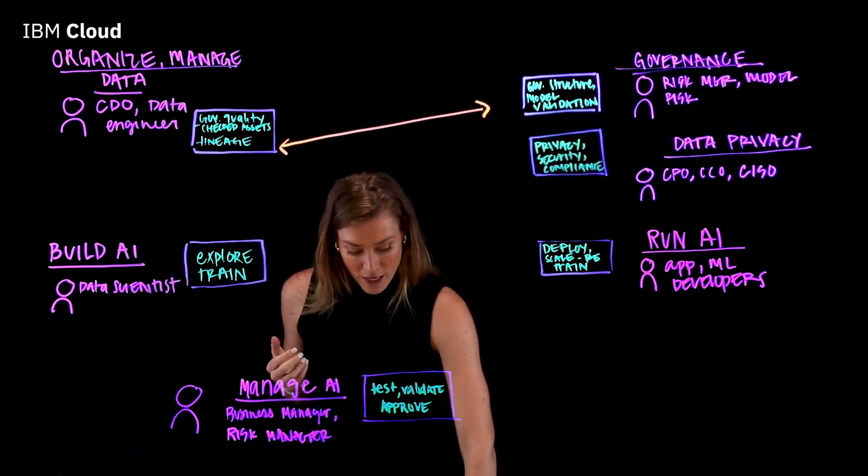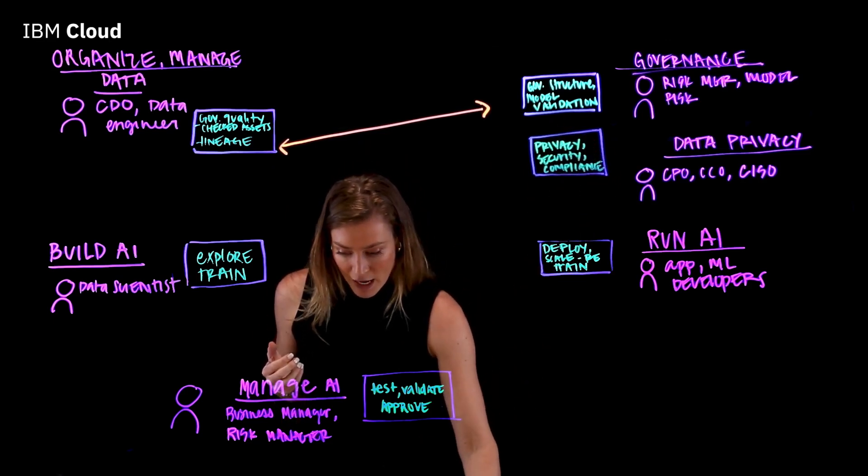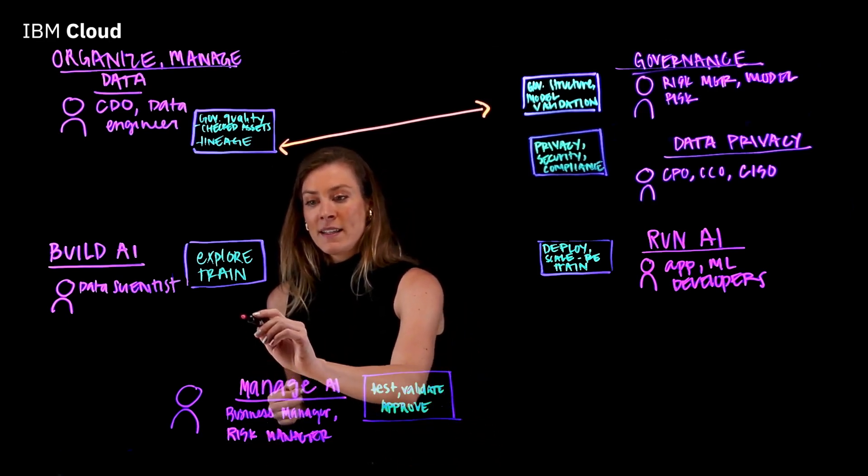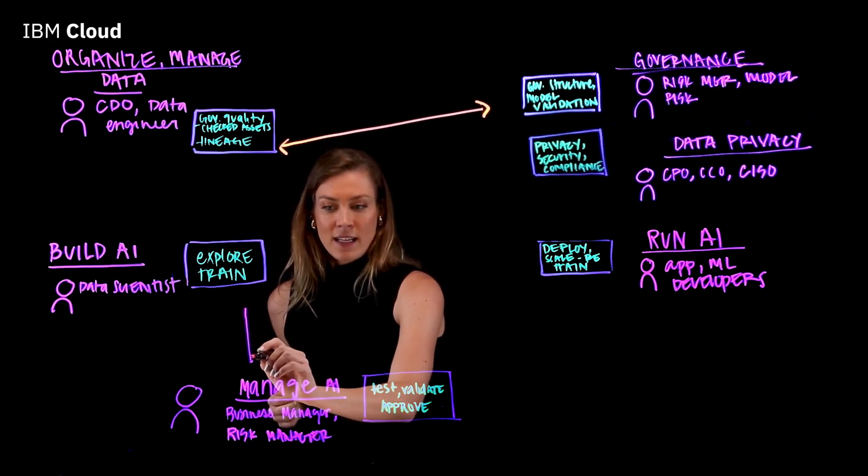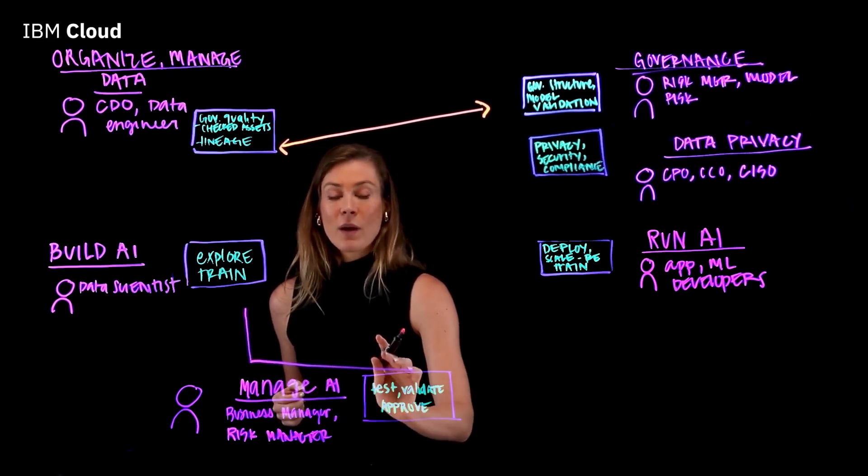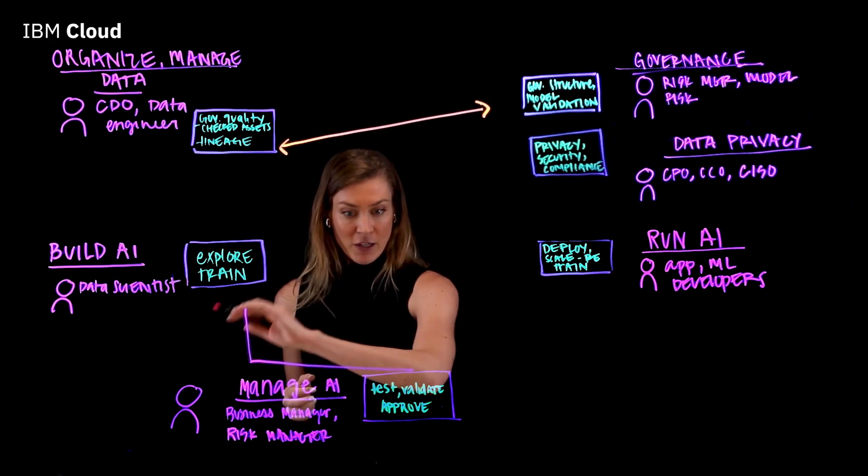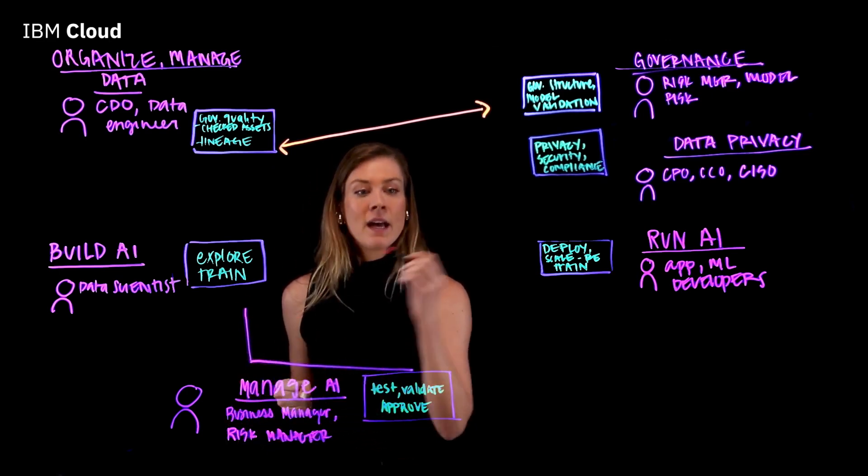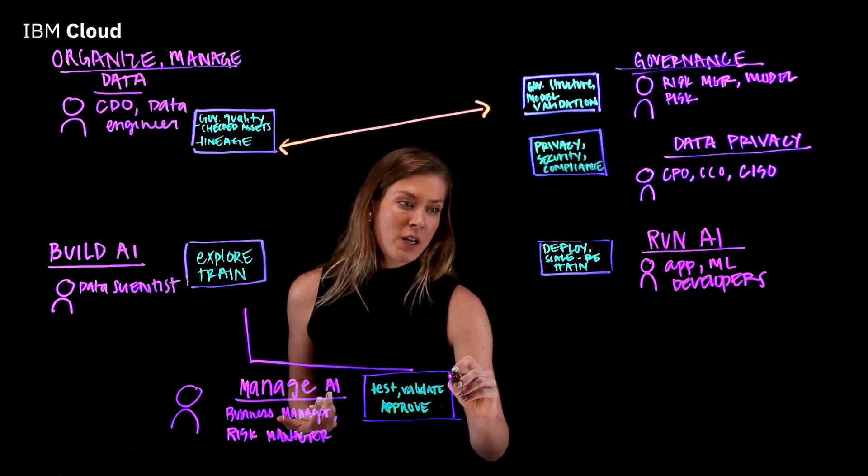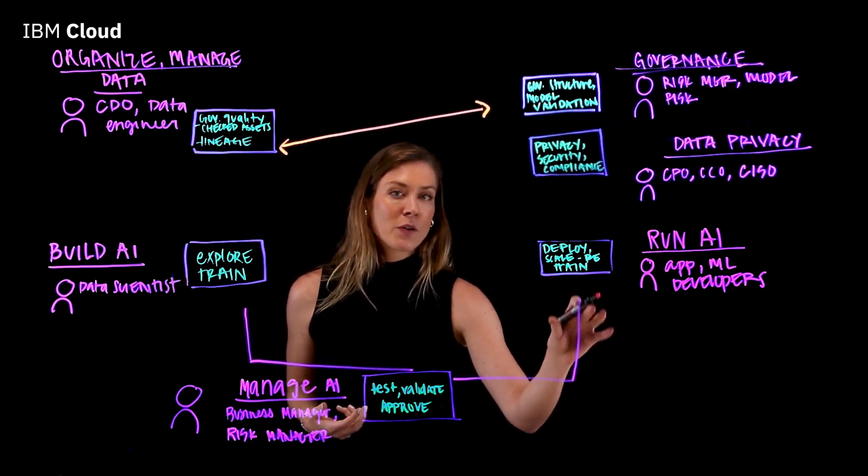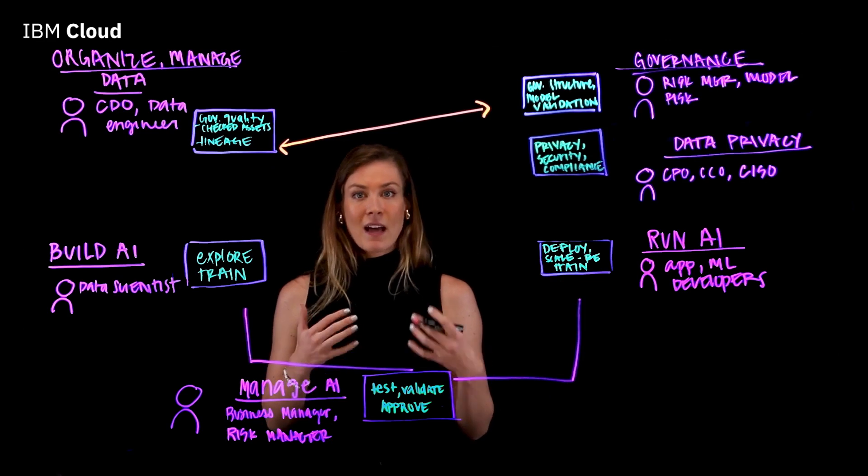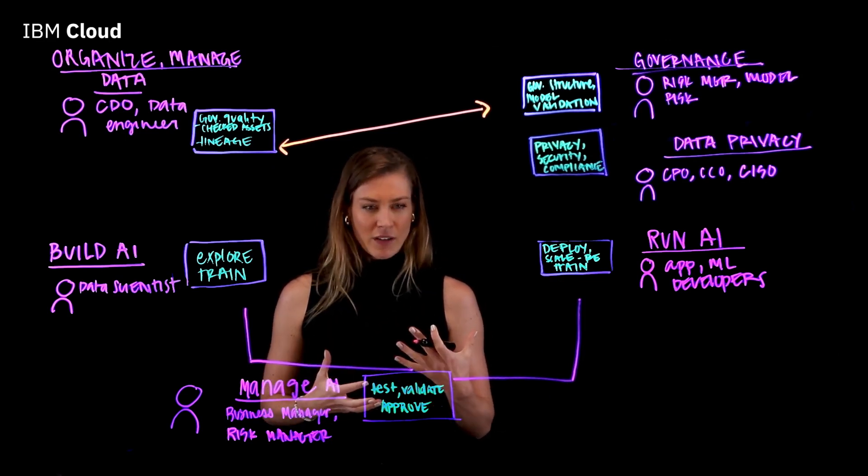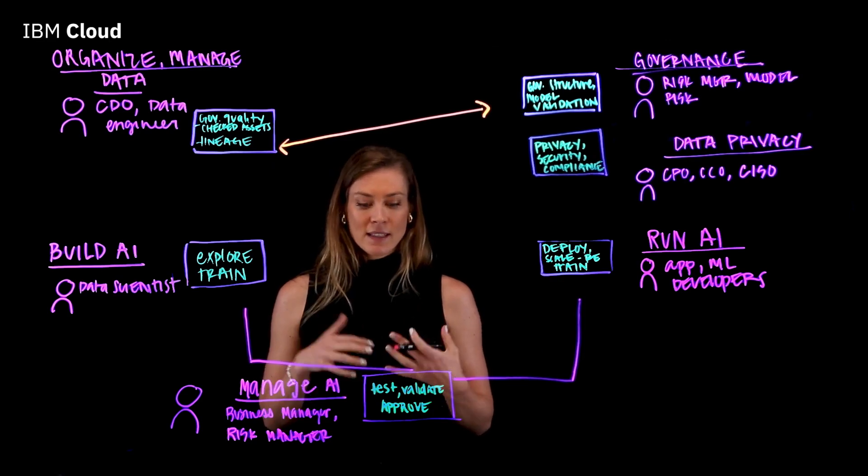If we are looking at how we are building our models, we want to make sure that we are testing and validating here. Before we go into production, we want to make sure that we are within compliance. But then once we are in production, we also want to make sure that we are validating our models to make sure that they are still accurate, that they are unbiased, all of these things that we've touched on previously. So the robustness as well.